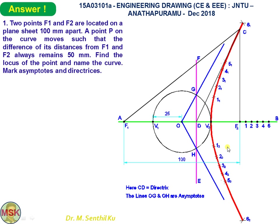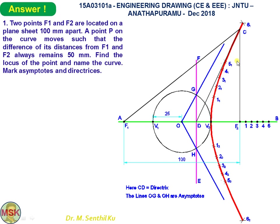For the second point, with V1-2 as radius and F1 as center draw an arc. Then with V2-2 as radius and F2 as center, cut an arc on the previous arc to get point 2-1. Following this method, you can get all the points. Join all the points by freehand in proper sequence in a single smooth curve.